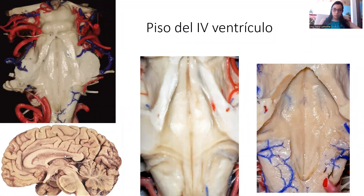This is a sagittal view of the brain. We have the corpus callosum here, knee and splenium. Here is the cingulate gyrus. This is the thalamus, hypothalamus and third ventricle, optic chiasm, and the pituitary gland.